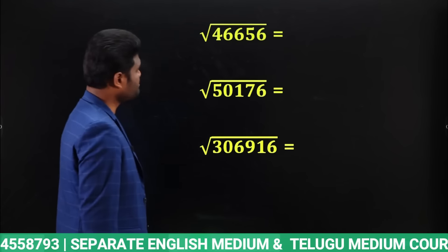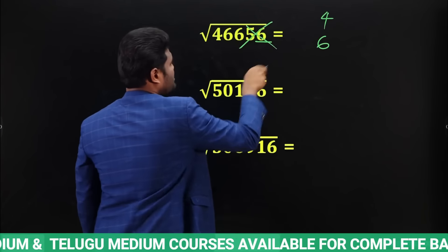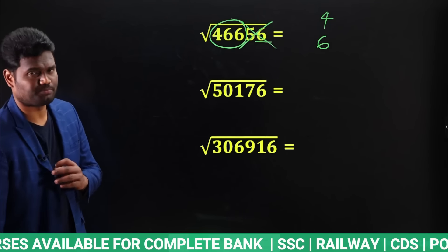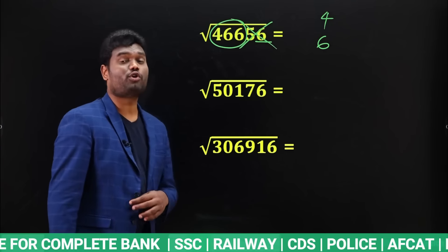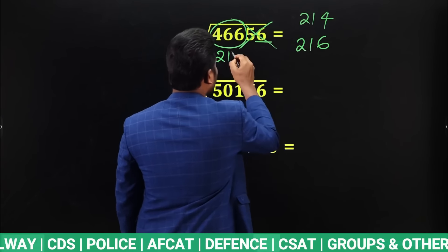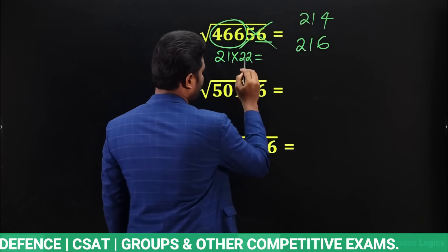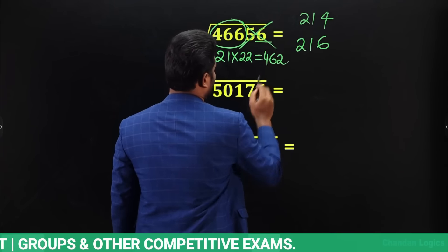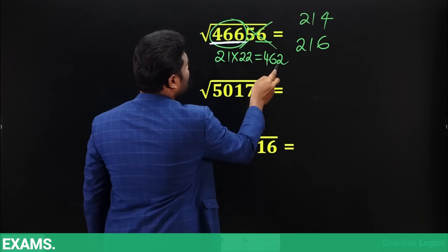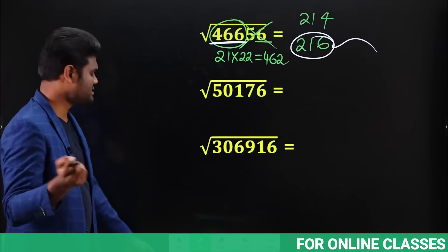For √46656: last digit is 6, possibilities are 4 or 6. Strike off last two digits — remaining is 466. Perfect square close to 466 and less than 466 is 21² = 441, giving 214 or 216. Multiply 21×22 = 462. Compare: 466 is bigger than 462, so answer is the bigger value — 216. So √46656 = 216.